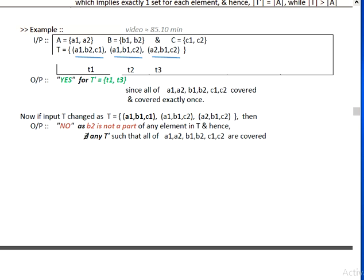Now in this case, if we take a subset of t1 and t3 which is T prime, a subset of T, then the output will be yes. We can guess this subset and the output will be yes since all the elements a1, a2, b1, b2, c1, c2 are covered and covered exactly once.